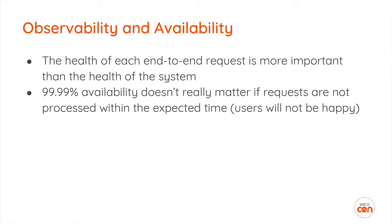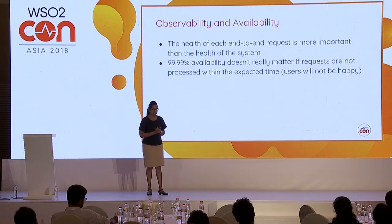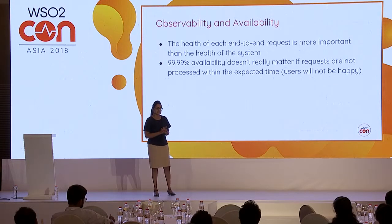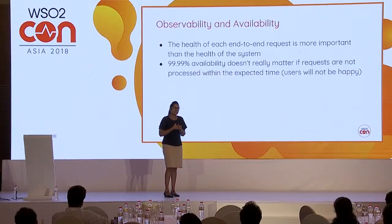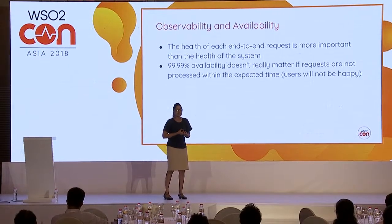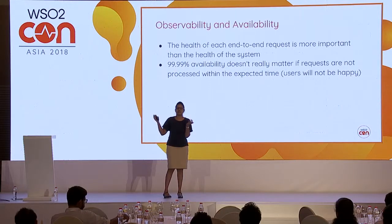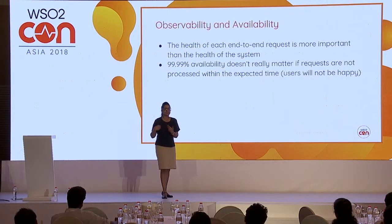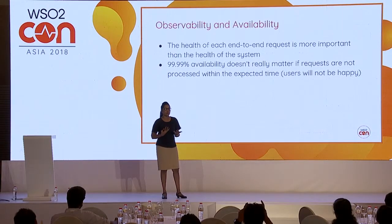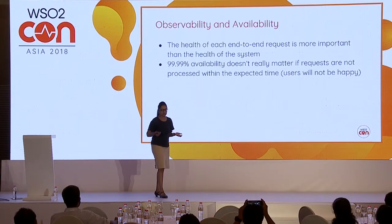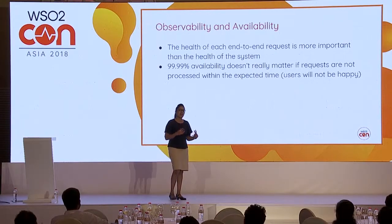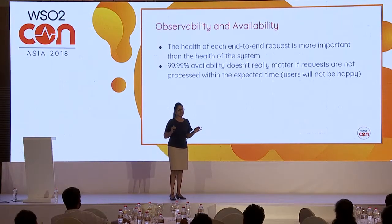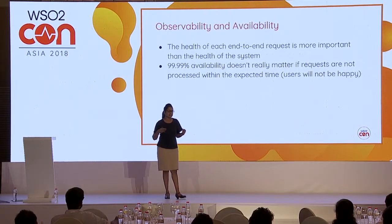Let's move into related concepts — observability and availability. Most of the time, customers are worried about availability: whether the system is up and running to serve all requests. But more than that, it's the user experience that actually matters. There's no point having a system up and running at 99.99% if user requests are taking more than 10 seconds. If the system is very slow, there is no point of it being up. So we need observability on production systems to understand the health and experience of end users.